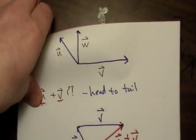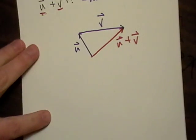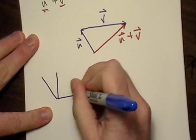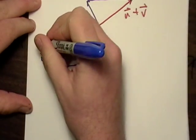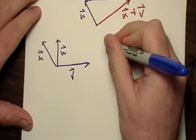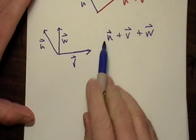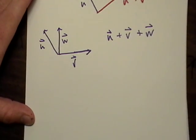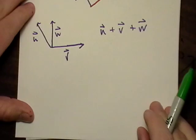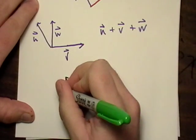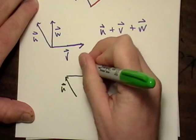Now, what if I wanted to add all three of these vectors together? Let me start out with u — I'll rewrite it in green. Here's u, and we're going to add v to it. We just bring v and stick it up to the top there.